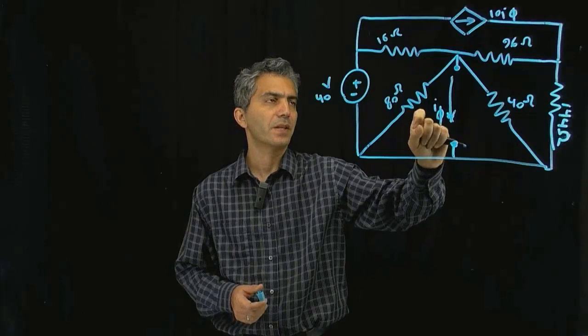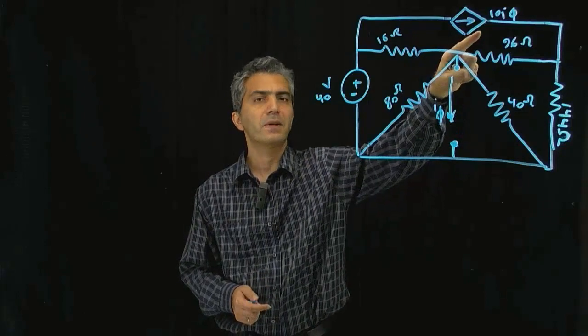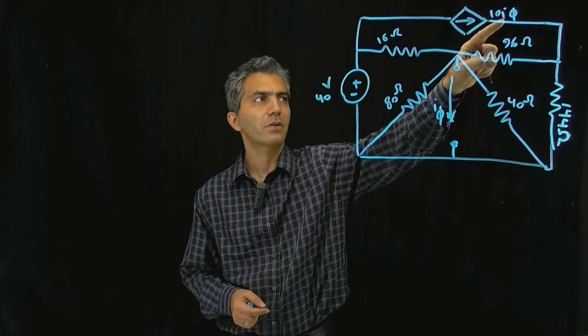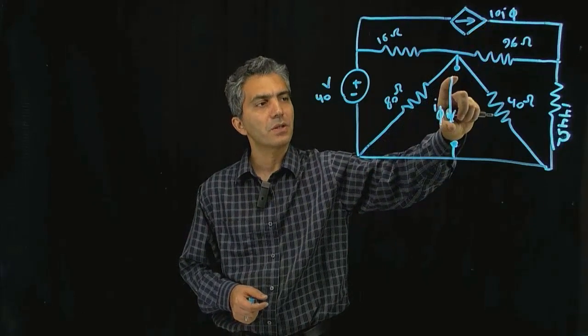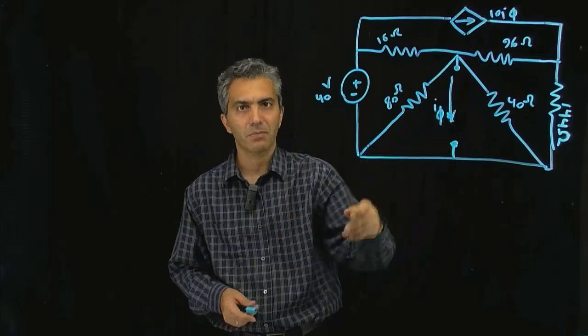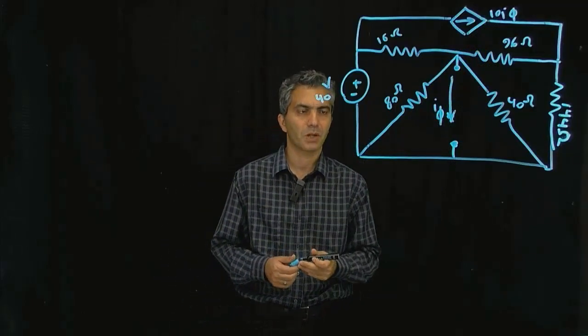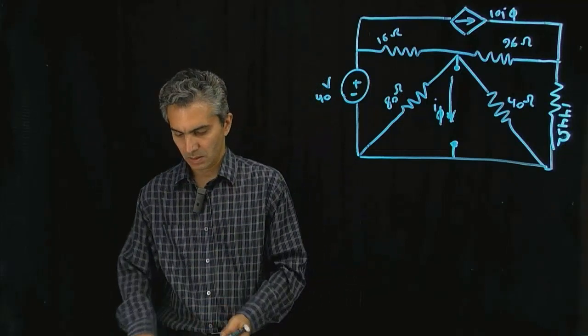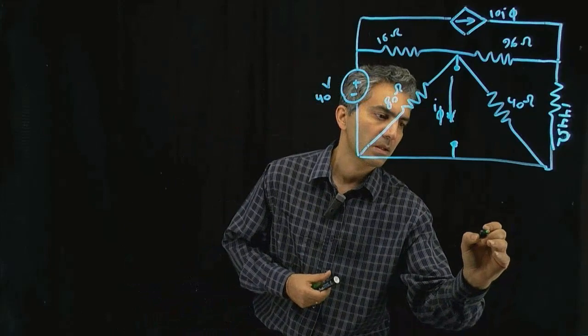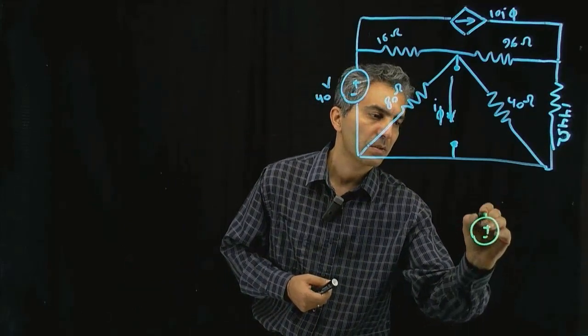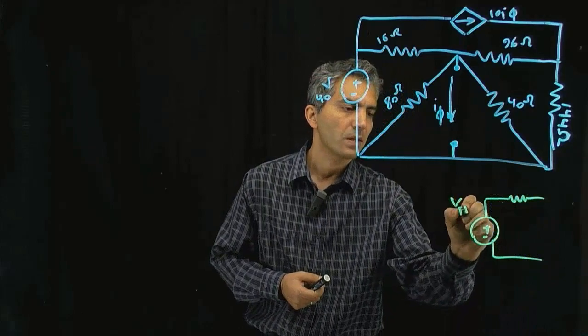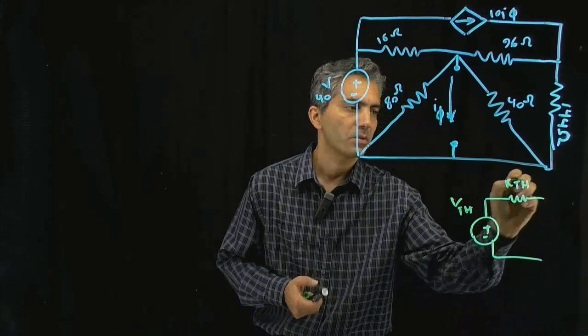The idea here is that we have a dependent current source, the current of which is a function of the current that would pass through these two terminals. The process to develop a Thevenin model consists of a source in series with a resistor, V_Thevenin and R_Thevenin, as you remember.